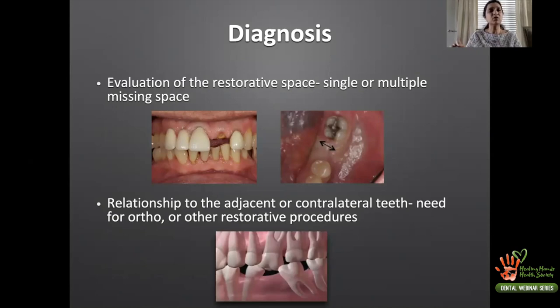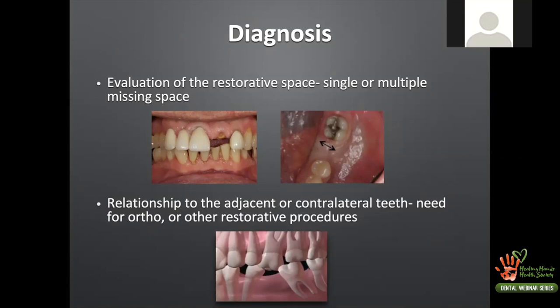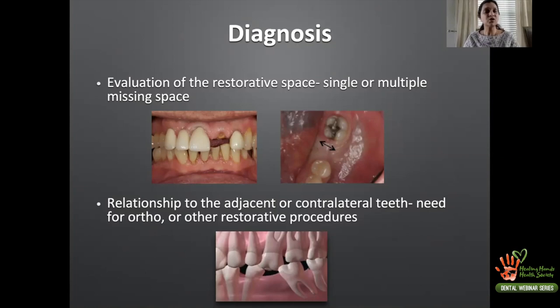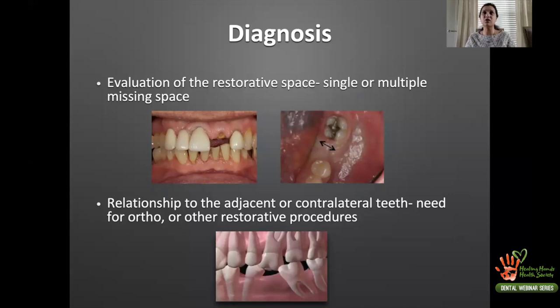When looking at space, it is important to identify whether it is a single or multiple missing space. When a tooth has been missing for a long time, teeth can migrate and compromise the restorative space. You have to assess the restorative space, evaluate for mesial migration, and determine whether the patient needs orthodontic treatment prior to implant placement or restorative procedures such as a crown to homogenize the plane of occlusion.